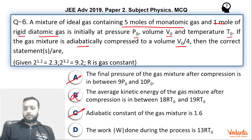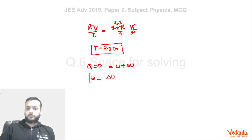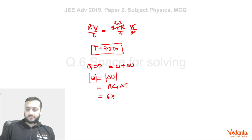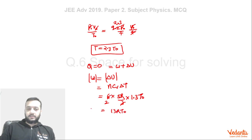The magnitude of work done during the process: for an adiabatic process Q = 0, so W = ΔU. Magnitude-wise, |W| = nCv ΔT, where n = 6, Cv = 5R/3, and ΔT = 1.3T0 (since temperature went from T0 to 2.3T0). This gives 6 × (5R/3) × 1.3T0 = 13RT0, which is the right answer.